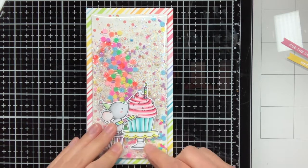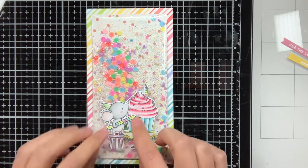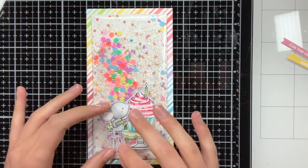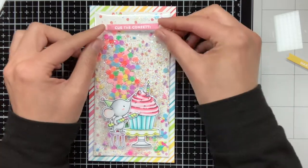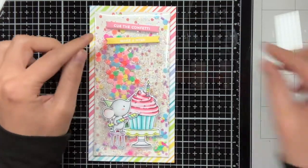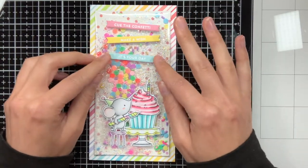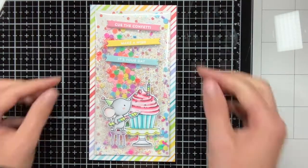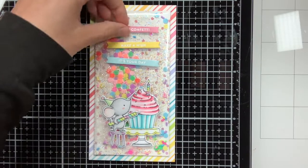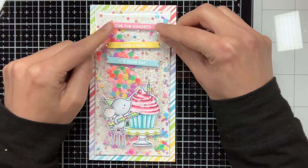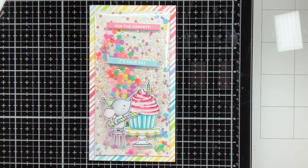For adhering the images to the shaker I am using some liquid glue, but you could also use some double sided adhesive if you want to. Then for the sentiments I wanted to put them in an angle, to make it look more festive and playful. Before I am adhering it down I first play with the position until I am happy, and then I will go ahead and commit.